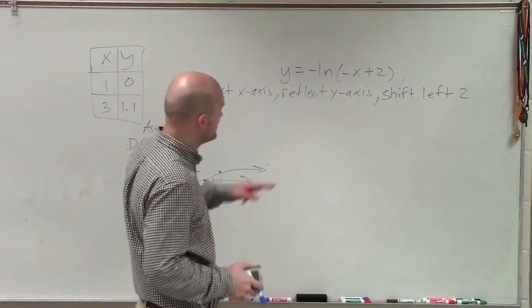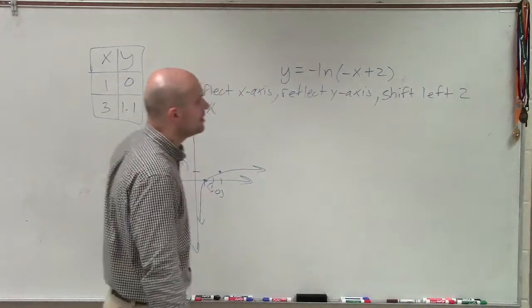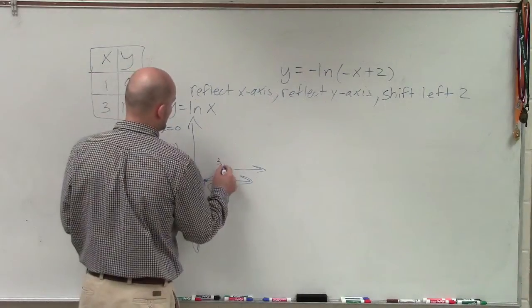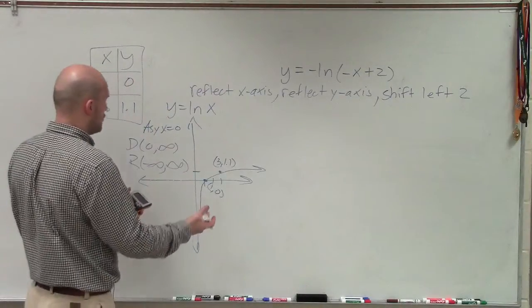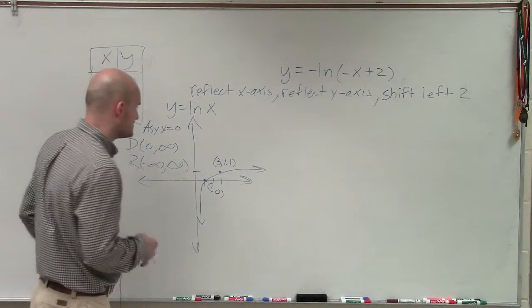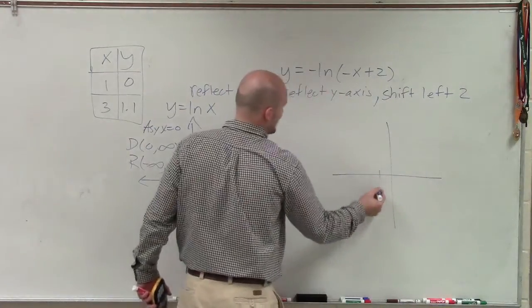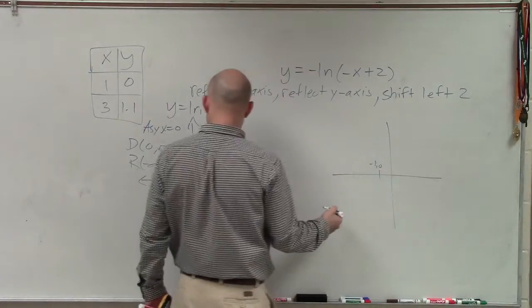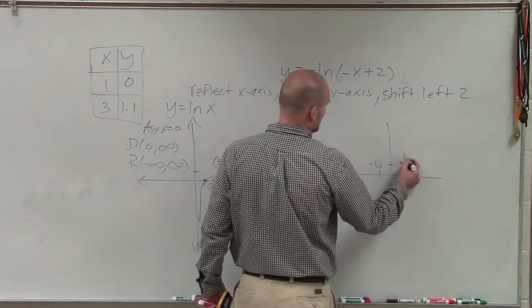So the first transformation that I'm going to want to apply before I do my reflections is I'm going to want to apply my shift left 2. So currently, I have two points, 3 comma 1.1. All right, so if I shift this graph over two units to the left, I'm now going to have a new point at negative 1, 0.